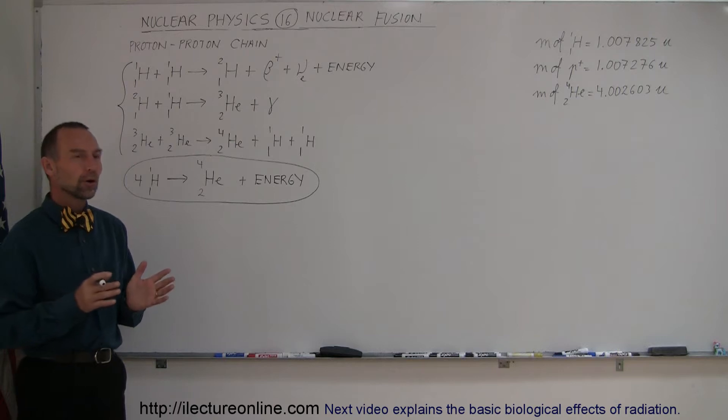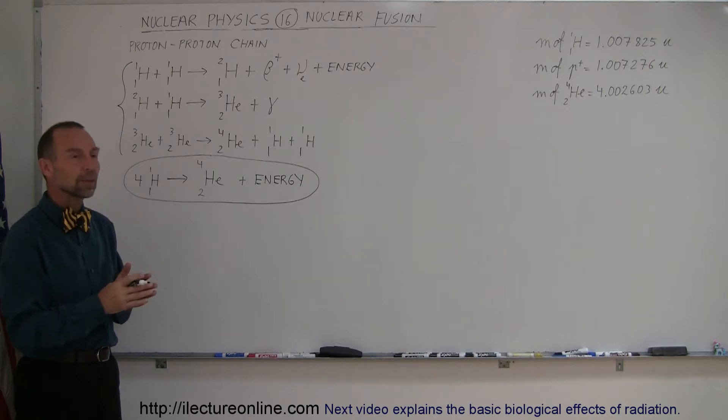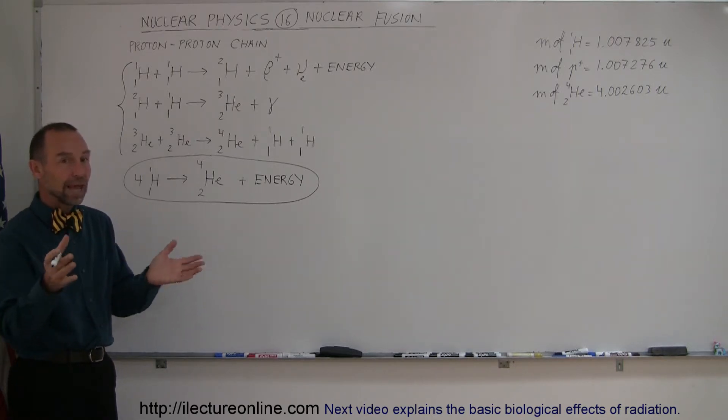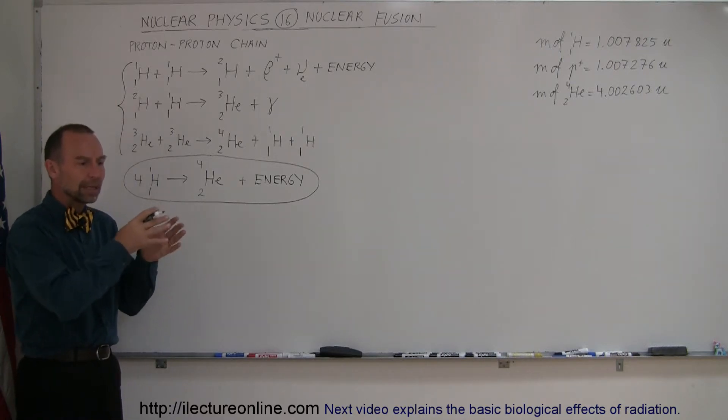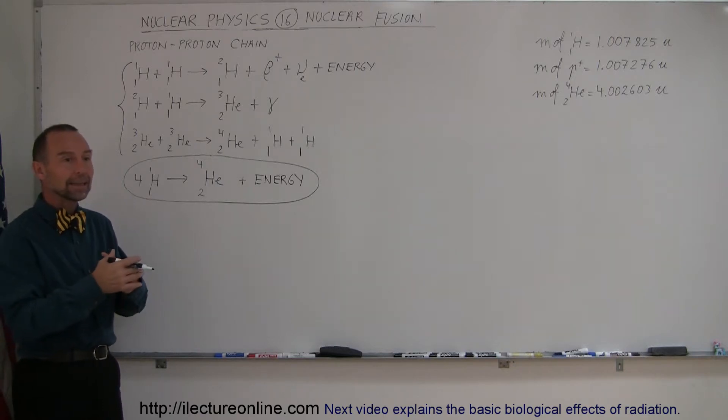What we've learned so far is that when we have large unstable nuclei, they sometimes eject particles to try to become more stable. In the process, the daughter products have less mass than what you started with. So whenever large nuclei break down into smaller nuclei, they release energy by converting mass to energy.